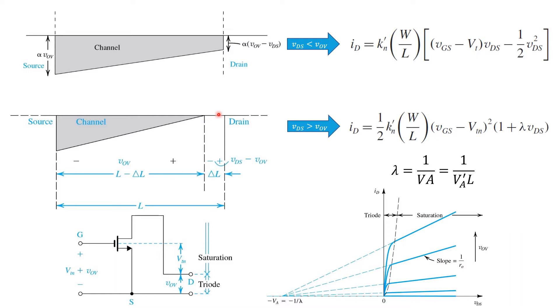The channel region effectively gets pinched off and shortened by some amount. However, in spite of this, current continues to flow between drain and source. You can think of it as the source has injected carriers into the channel, and there is an electric field sweeping them across. So once they're in there, they continue to flow all the way to the drain.